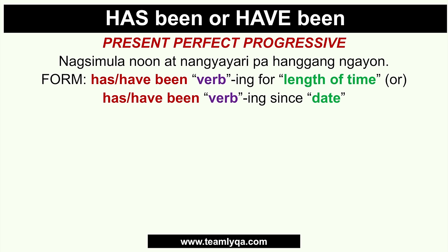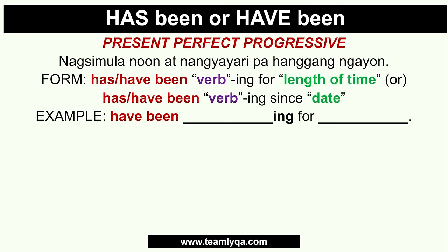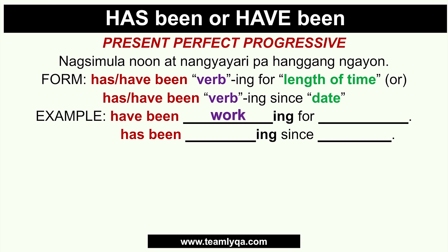An example would be: have been working for three years. Or using the second form: has been working since 2012. You have a subject at the beginning — so: blank have been working for three years, or blank has been working since 2012. Now, have and has are interchangeable in terms of the time marker — you can say has been working for three years or have been working since 2012. The question is: when do you use has versus have?